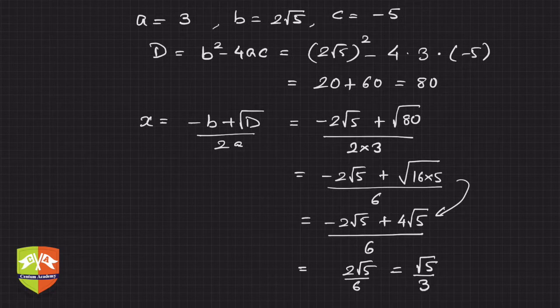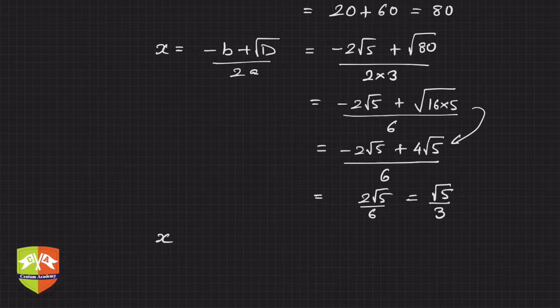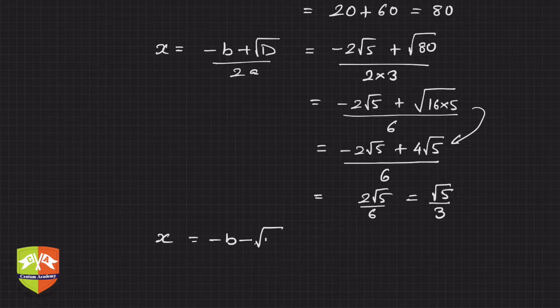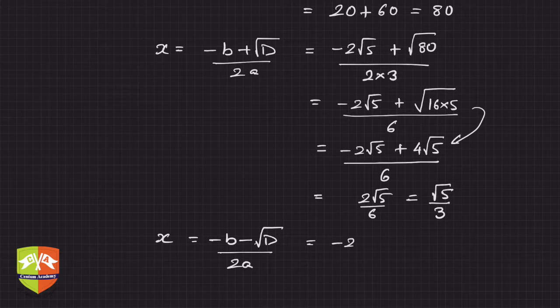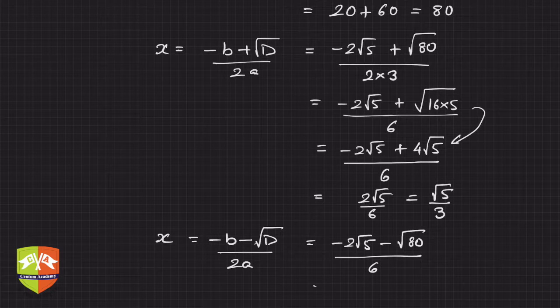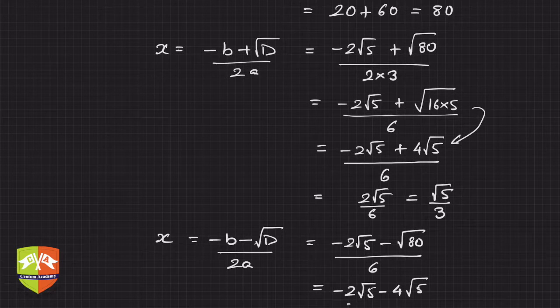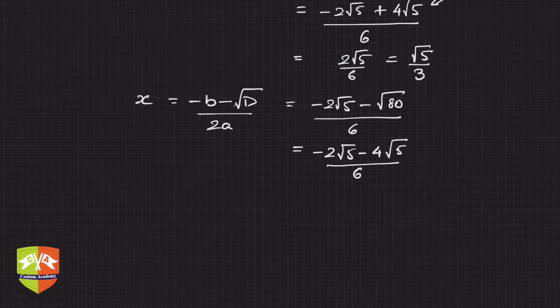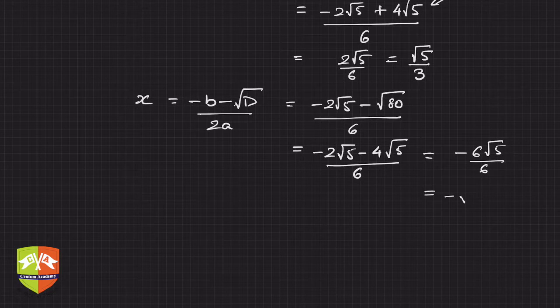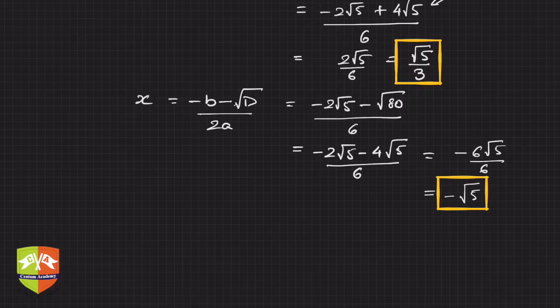This simplifies to 2√5/6, which is √5/3. This is the first solution. What about the other solution? Simply change the formula: x = (-b - √D)/(2a) = (-2√5 - √80)/6 = (-2√5 - 4√5)/6 = -6√5/6 = -√5.